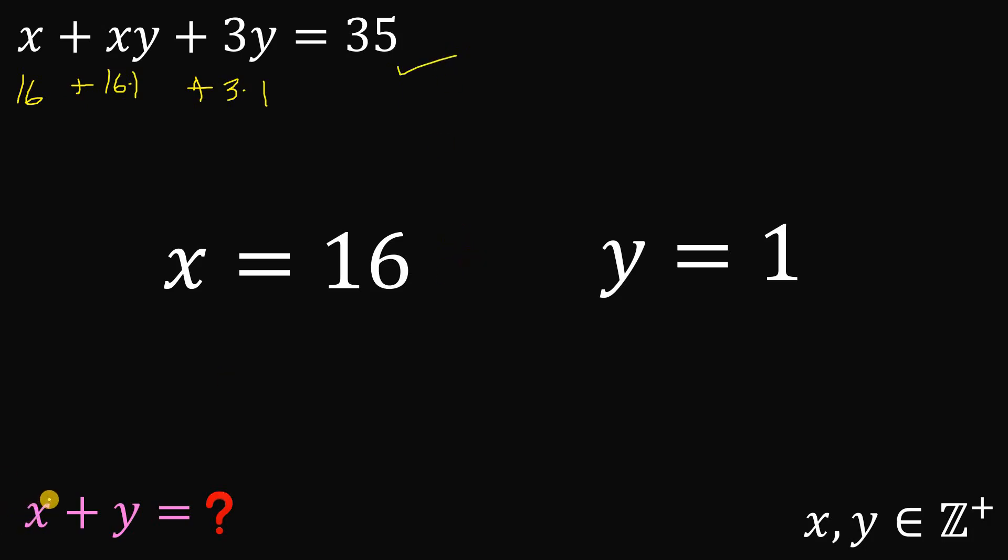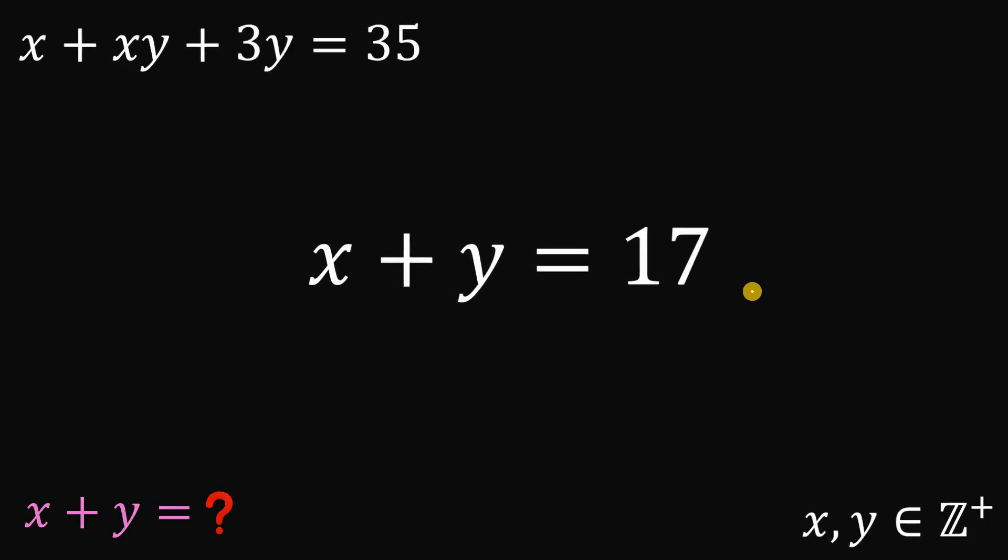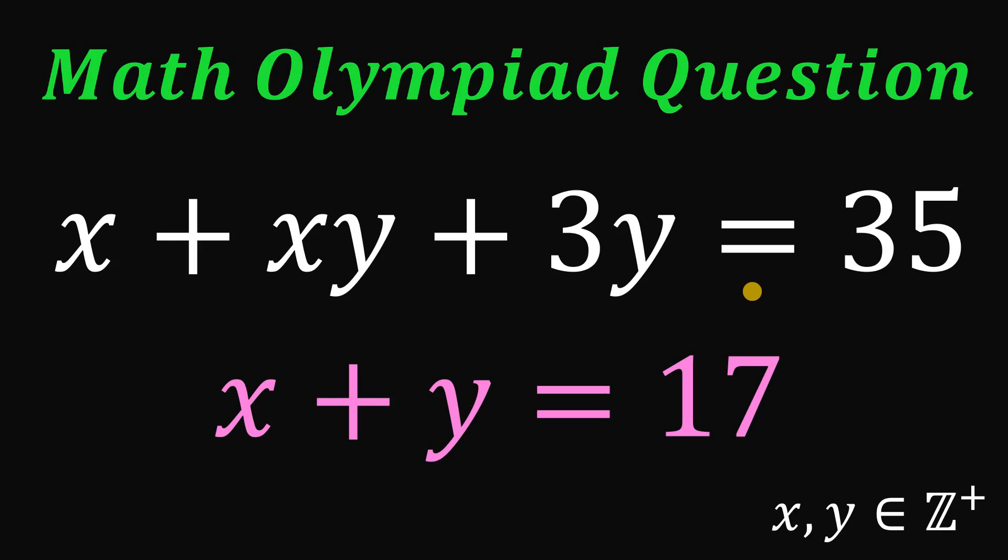And we want the sum of x and y, so let's add these two values. So x plus y equals 16 plus 1 or simply equal to 17. And that is the answer to this question. Therefore, given this equation x plus xy plus 3y equals 35, the sum of x and y must be equal to 17.